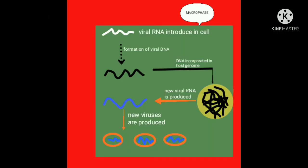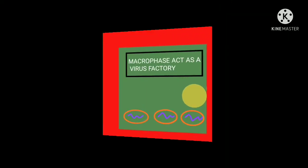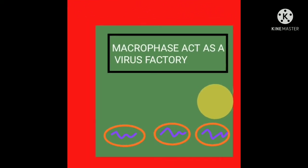Here you can see clearly that viral DNA is incorporated into the genome of the host cell, and by this a new viral RNA is produced by the nucleus of the macrophage.